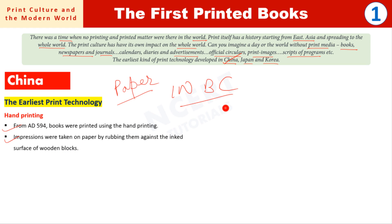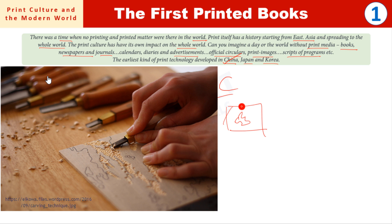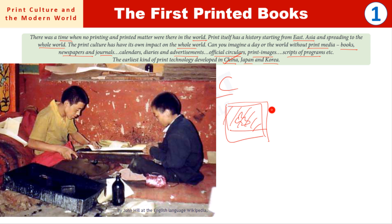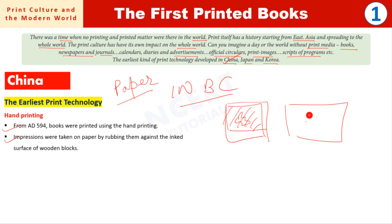Wooden blocks had designs carved onto them that were raised above the surface. After carving, ink was applied to the block, paper was placed over it, and slight pressure was applied. When the paper was removed, the inked design had been printed onto it. You can try this today with a key that has a letter on it — ink the raised part, place paper over it, press lightly, remove the paper, and the letter will be printed.